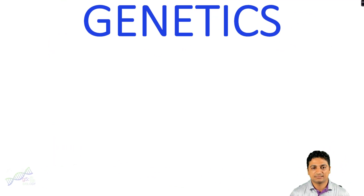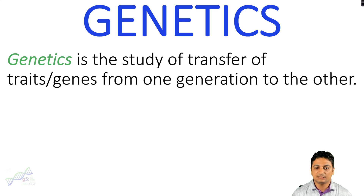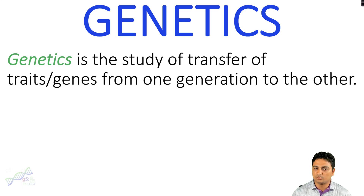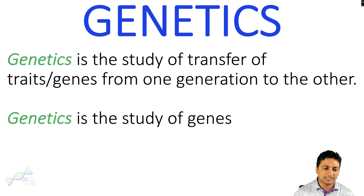So what is genetics, or what is the definition of genetics? Genetics is a branch of science which studies about genes. Initially, genes were compared with traits, so genetics was defined as the study of transfer of traits. A trait is a phenotype that we see, which is a result of a gene. So a refined definition would be: the study of transfer of traits or genes from one generation to the other — that means from parents to offspring.